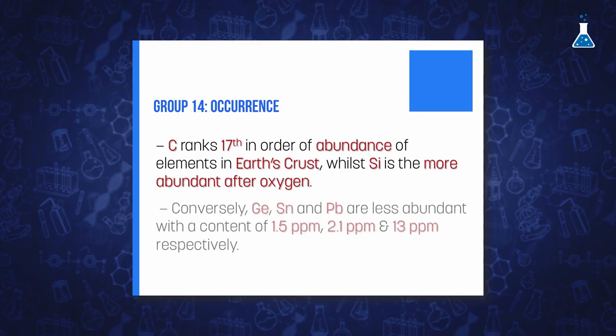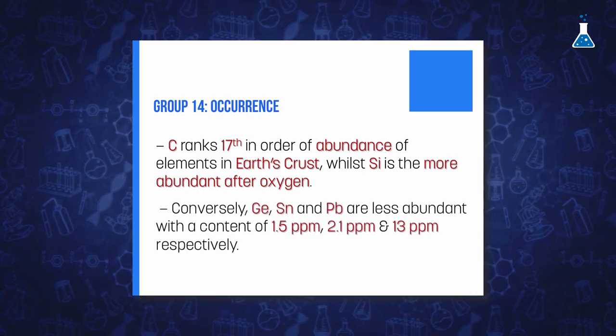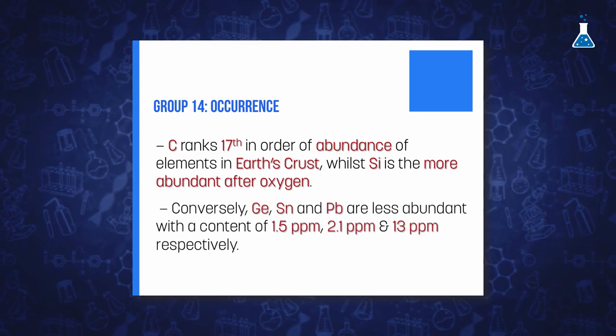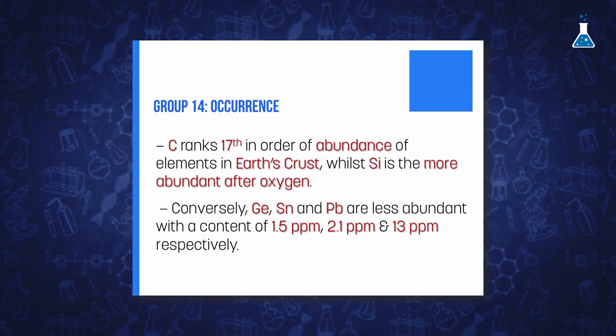The high presence of silicon contrasts with the low abundance of germanium, around 1.5 grams per ton of crustal rocks, that is, 1.5 ppm, ranking above the half of the complete list of elements.